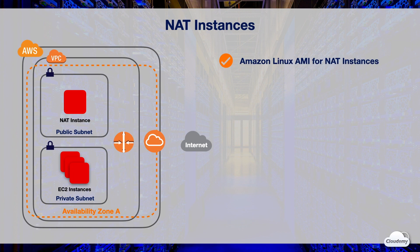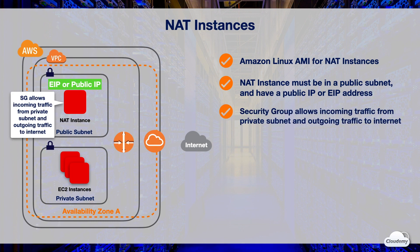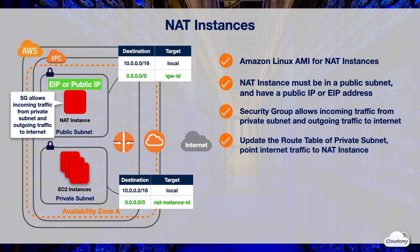NAT instances are similar to NAT gateway. A NAT instance is a special EC2 instance configured to perform NAT. AWS provides Amazon Linux AMIs that are configured to run as NAT instances. A NAT instance must have internet access — it must be in a public subnet that has a route table with a route to the internet gateway, and it must have a public IP address or an elastic IP address. You need to create a security group for your NAT instance to enable it to receive internet-bound traffic from instances in a private subnet. You must add a route to the route table of the private subnet that sends all internet traffic to the NAT instance in the public subnet, which then sends the traffic to the internet gateway for the VPC.